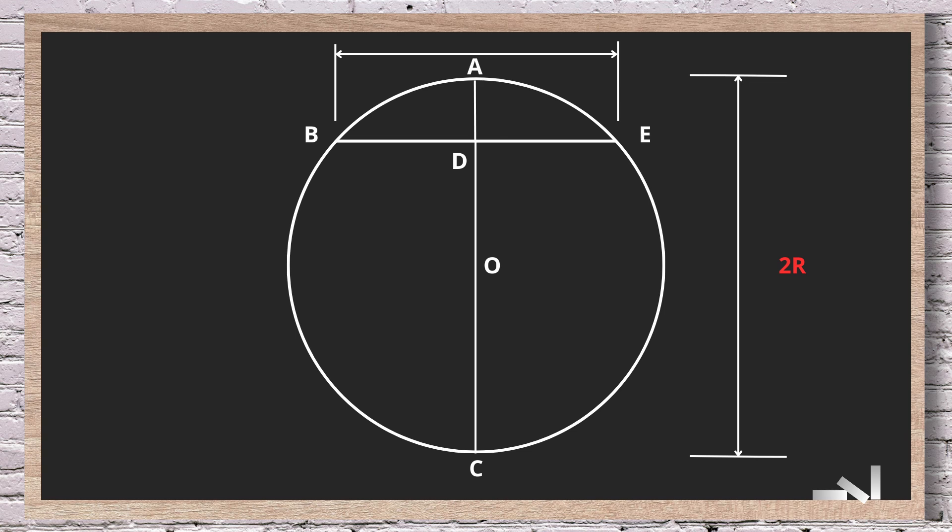Now we need to add the critical measurement. Remember the versine that was the measurement mentioned earlier? Well, here it is. The versine, let's call it V, nice and simple, is the distance between point A and point D. But, this still doesn't get you the radius. Patience, we are close.